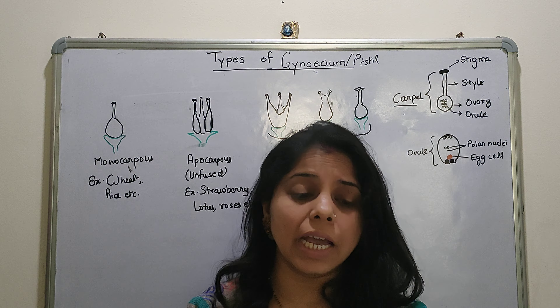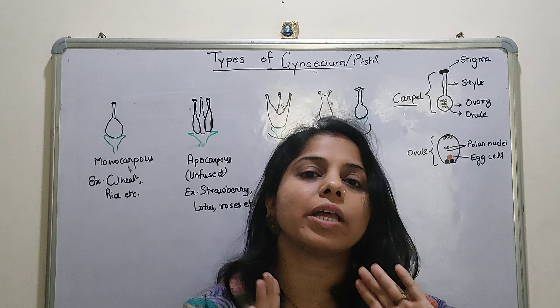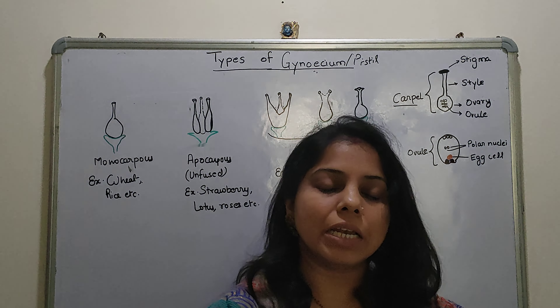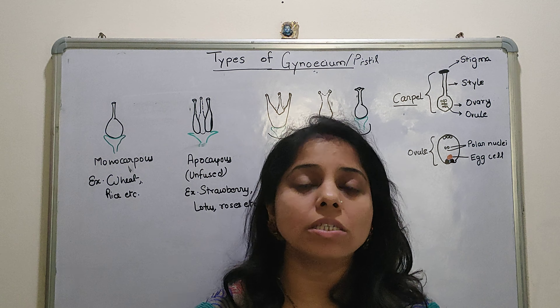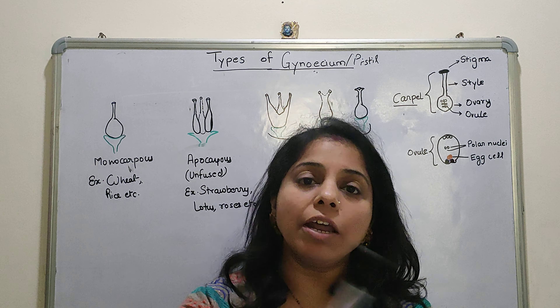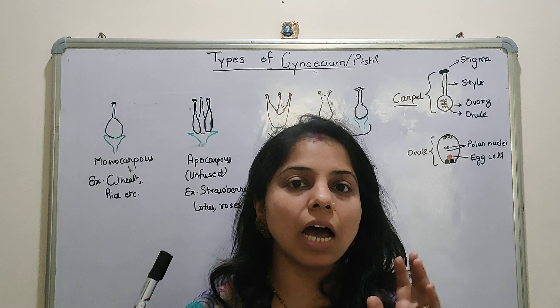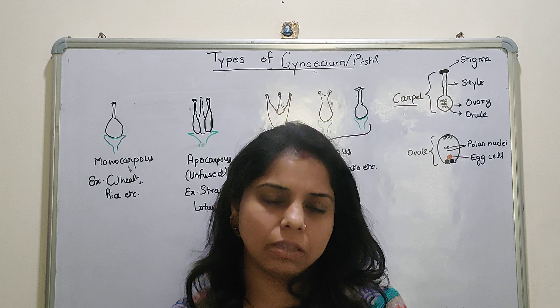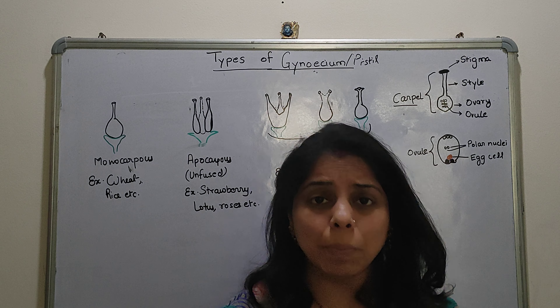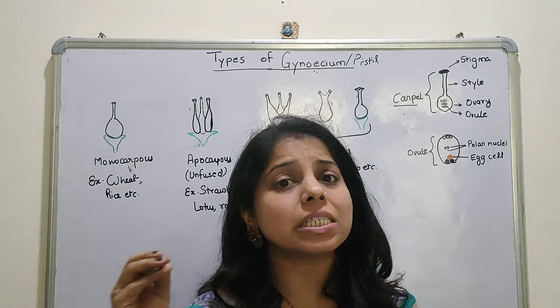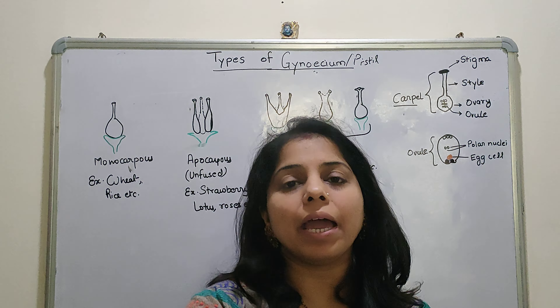Gynoecium is the fourth whorl of a flower. We know the flower has 4 whorls: Calyx, Corolla, Androecium, and Gynoecium. Calyx and Corolla are the non-reproductive parts of a flower, while Androecium and Gynoecium are the reproductive parts. Androecium, which we have already discussed, is the male reproductive part.